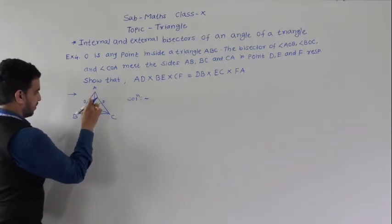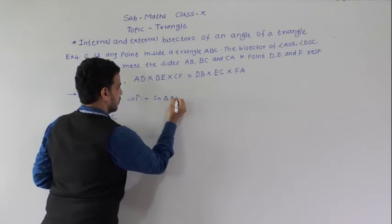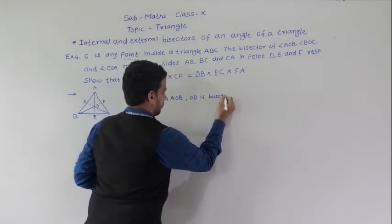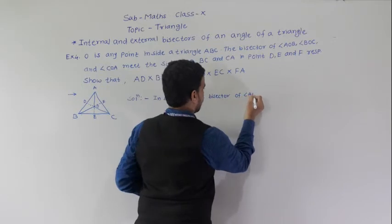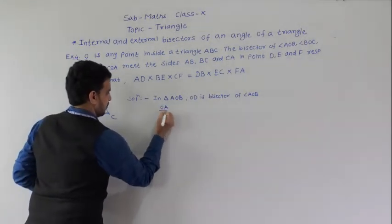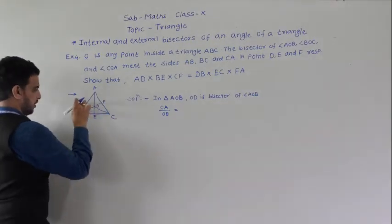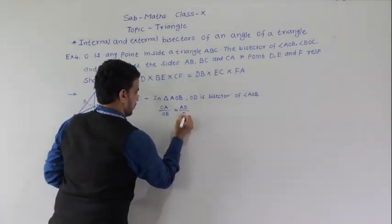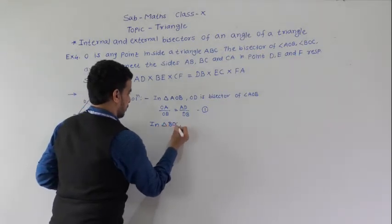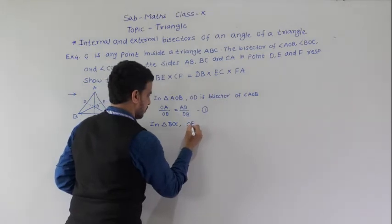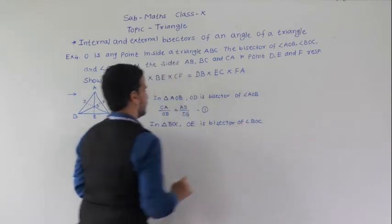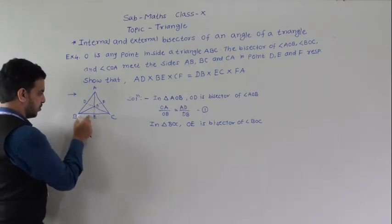In triangle AOB, OD is the bisector of angle AOB. Therefore OA/OB = AD/DB. This is equation 1. Similarly, in triangle BOC, OE is the bisector of angle BOC. Therefore OB/OC = BE/EC. This is equation 2.